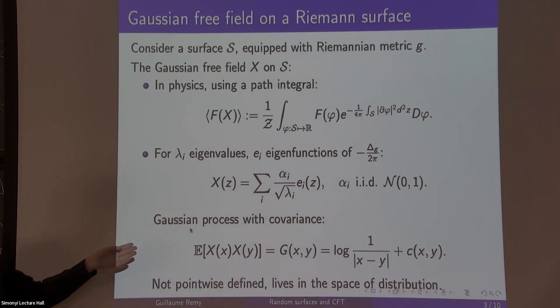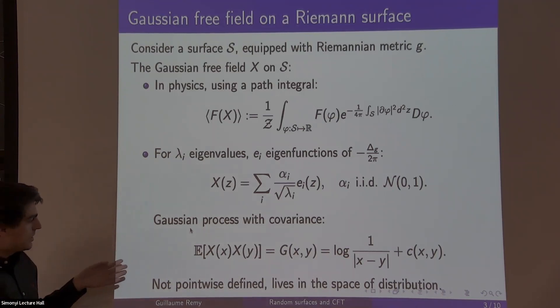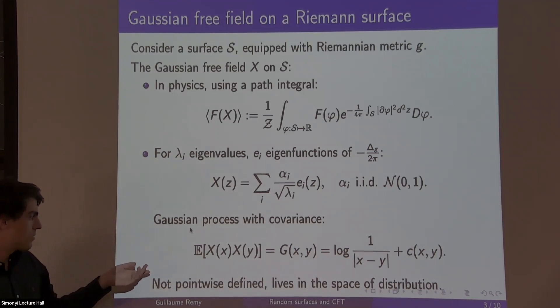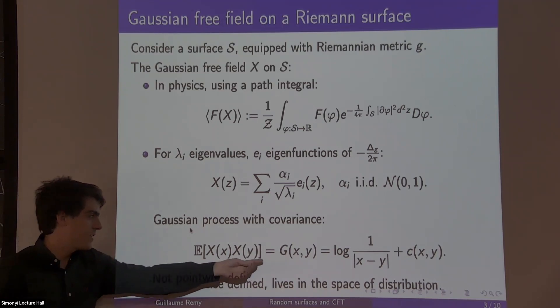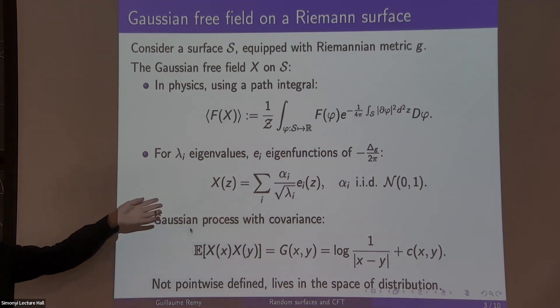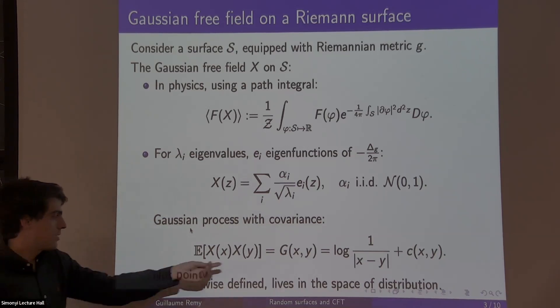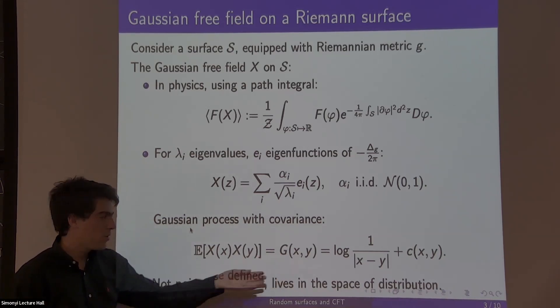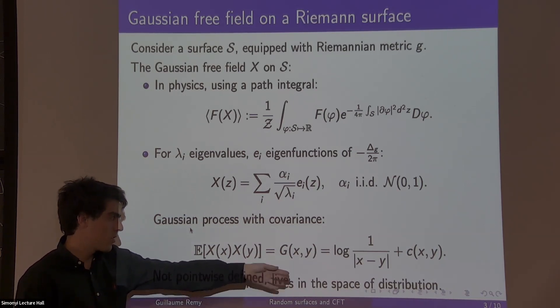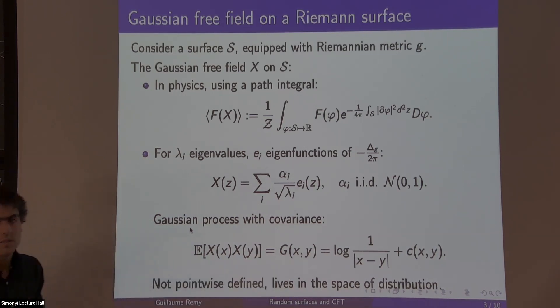So in more mathematical terms, you can make sense of this by considering the Laplacian operator on your surface, diagonalize it, have eigenvalues, eigenfunctions, and the Gaussian free field corresponds to this series where you put independent normal Gaussian random variables in front of every mode of the Laplacian.